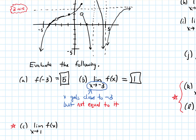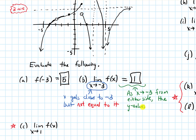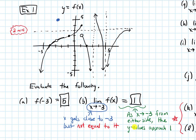The reason it's 1 is because as x gets close to negative 3 from either side, the y values — which is f of x — are approaching 1. I'd encourage you to pause the video and think about that for about a minute if you're unclear about why it's 1. We're going to do several examples to get more comfortable with this idea.